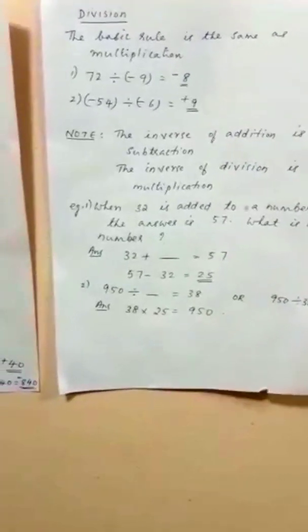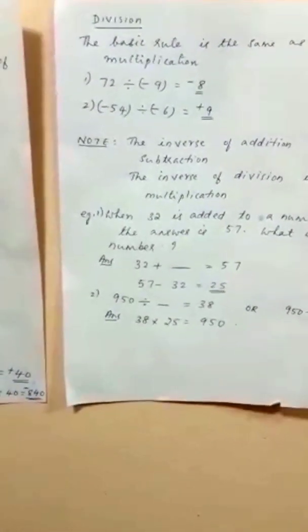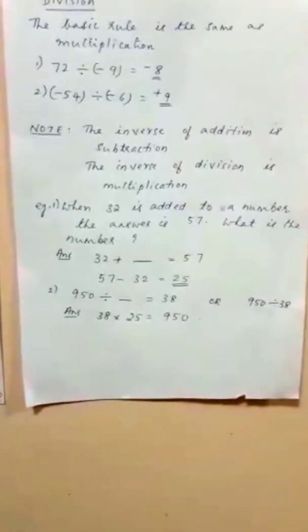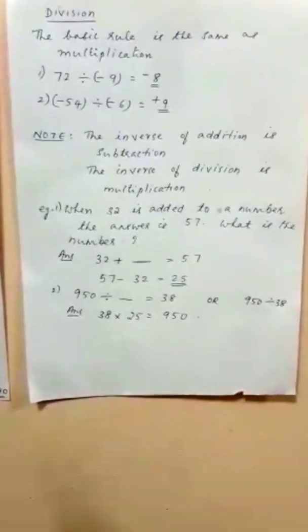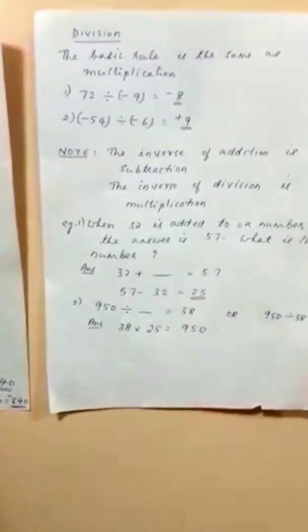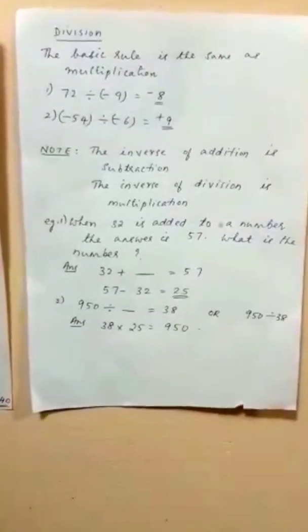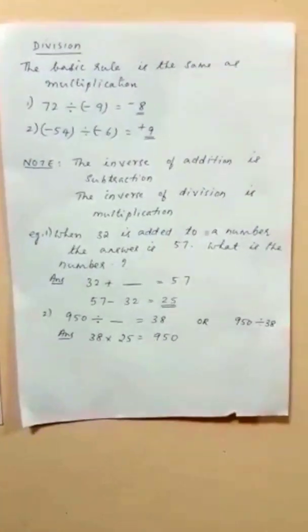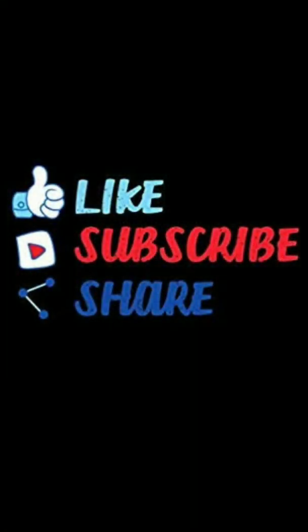The next important rule: the inverse of addition is subtraction, and the inverse of division is multiplication. Example: when 32 is added to a number the answer is 57 — apply inverse, 57 minus 32 equals 25. For division: 950 divided by a number equals 38 — multiply 38 times 25 to get 950, so the answer is 25. Feel free to comment your doubts and subscribe for more topics. Thank you.